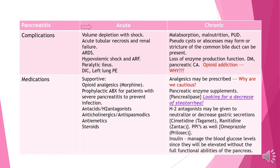Complications of acute pancreatitis include volume depletion progressing to shock if severe enough. GU issues such as acute tubular necrosis or acute renal failure may develop. They can have ARDS because of left-sided inflammation and inability to take deep breaths. Other complications include hypovolemic shock, paralytic ileus, DIC, and left lung pulmonary embolisms. Supportive medications include morphine for pain, prophylactic antibiotics for severe pancreatitis, antacids specifically H2 antagonists, anticholinergics or antispasmodics, antiemetics for nausea and vomiting, and steroids to help with the inflammatory process.